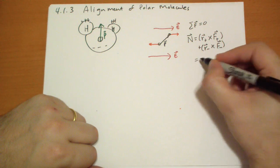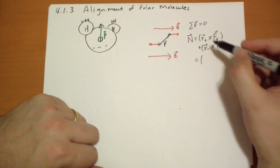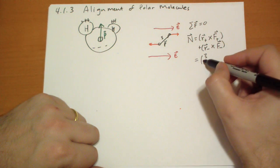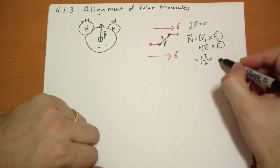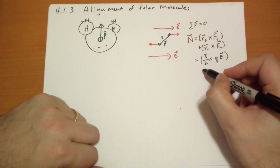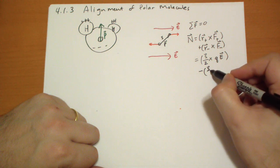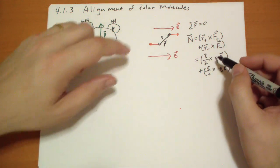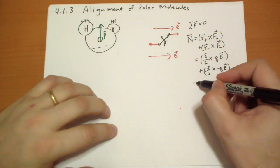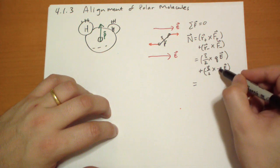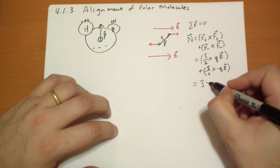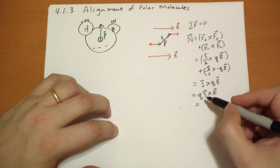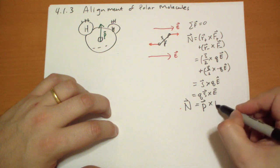We can calculate the torque because the net force is zero. The torque is R to the positive charge cross the force on the positive side plus R to the negative side cross the force on the negative side. Taking the origin at the center, this becomes S/2 cross QE plus S/2 cross QE, which equals Q times S vector cross E vector, which is just the dipole moment cross the electric field: τ = P × E.